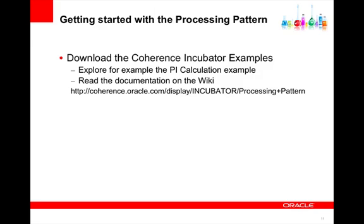To easily get started with the processing pattern, the first thing you should do is download the Coherence incubator examples. In that set of examples, there are a few examples for the processing pattern — one example I encourage you to explore is the pi calculation example. You should also read the documentation on the wiki, which has descriptions of how to use the APIs as well as more details on the architecture of the processing pattern. You can see the link on the screen.